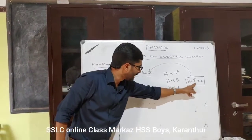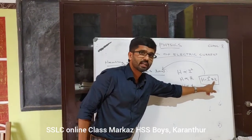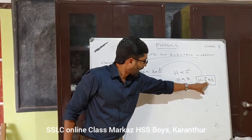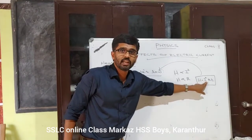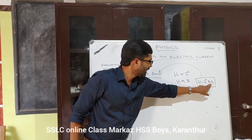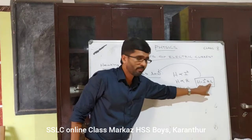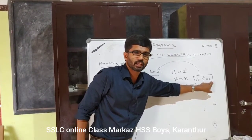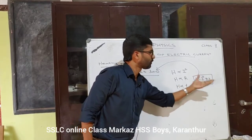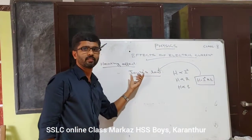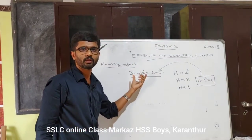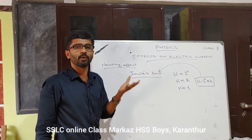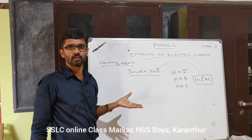In this equation, I is the electric current expressed in Ampere, R is the resistance expressed in Ohm, and T is the time expressed in seconds. When these units are used, the unit of heat H becomes Joule. Heat is a form of energy, and the unit of energy is Joule.